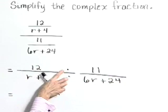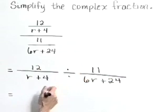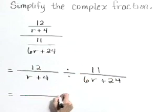Now in order to divide these rational expressions, we're going to actually multiply by the reciprocal of that divisor.